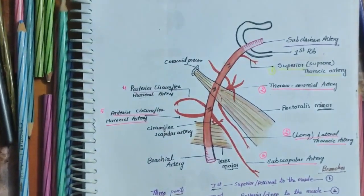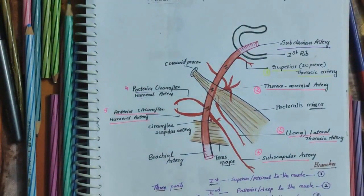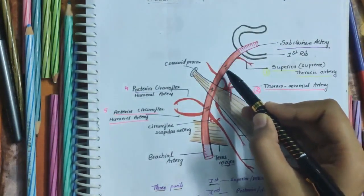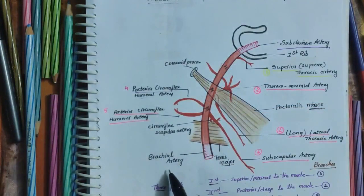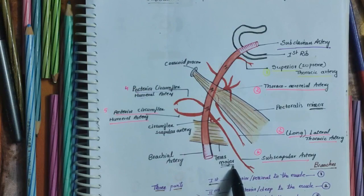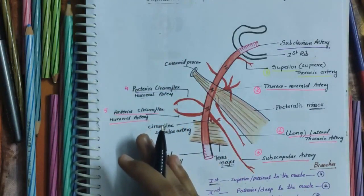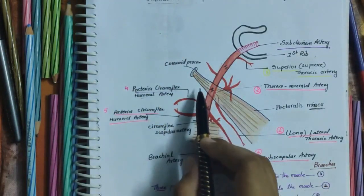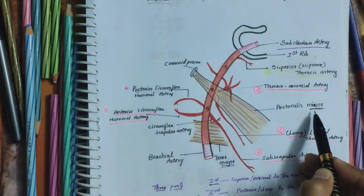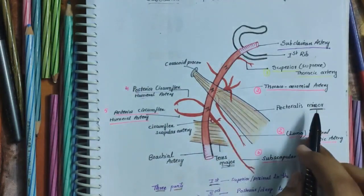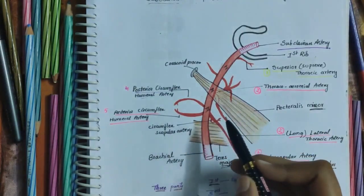The axillary artery is the main artery of the upper limb. It begins as the continuation of the subclavian artery from the upper border or outer border of the first rib, and it ends by becoming the brachial artery at the lower border of the teres major muscle. It crosses the axilla from apex to base. The axillary vein is medial to the artery and the cords of the brachial plexus are arranged around the second part of the axillary artery.